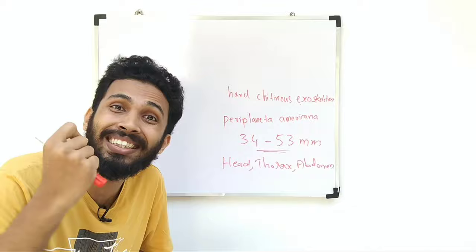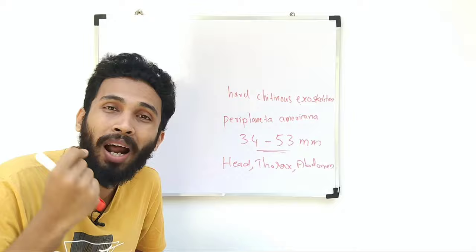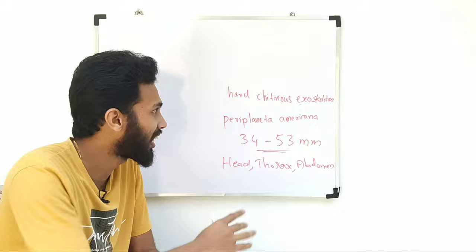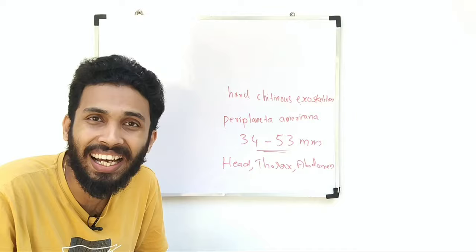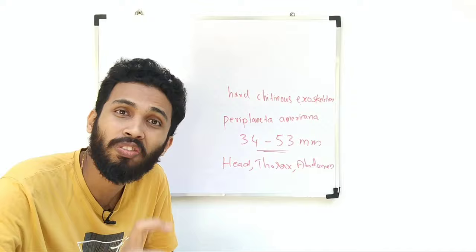Chitin is a polysaccharide. The color is brown. The exoskeleton plates are called sclerites.